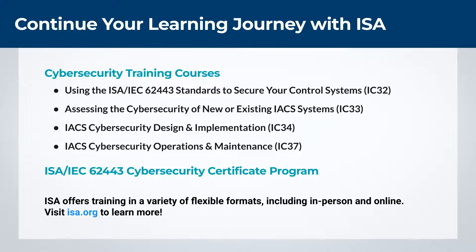The ISA industrial cybersecurity training courses and knowledge-based certificate recognition program are based on ISA-IEC 62443, the world's only consensus-based series of automation cybersecurity standards and a key component of government cybersecurity plans. This program covers the complete IACS lifecycle and is designed for professionals in IT and control system security roles who need to develop a command of industrial cybersecurity terminology and a thorough understanding of the ISA-IEC 62443 series of standards. Certificates are awarded to those who successfully complete a designated training course and pass the corresponding exam. Visit ISA.org to explore our IACS cybersecurity courses and certificate program.